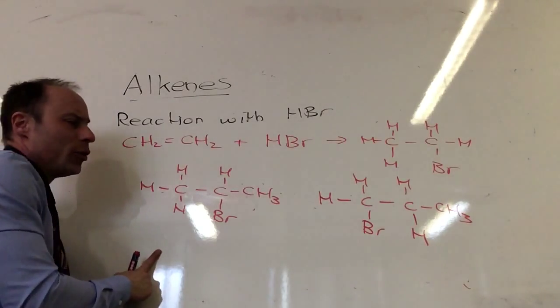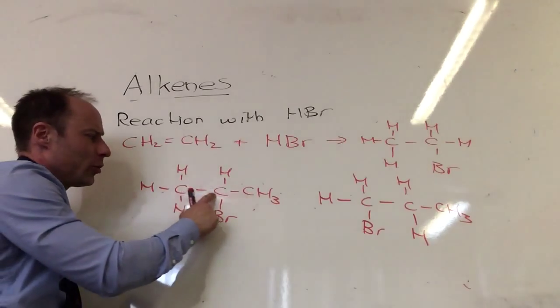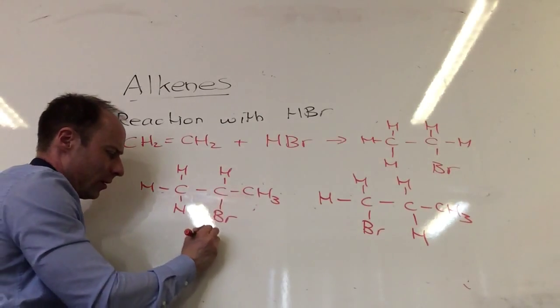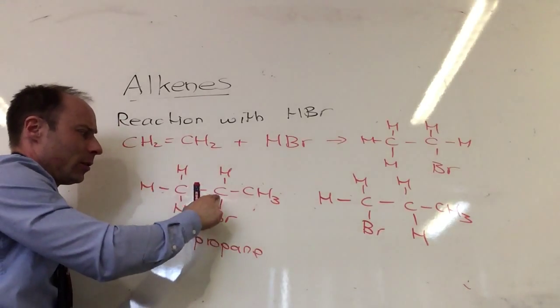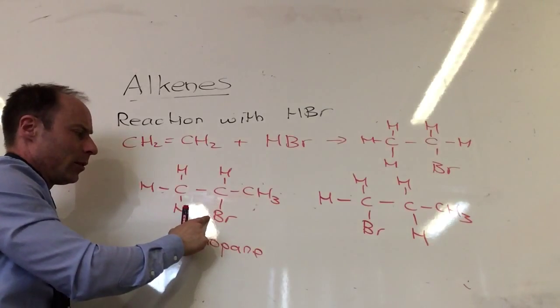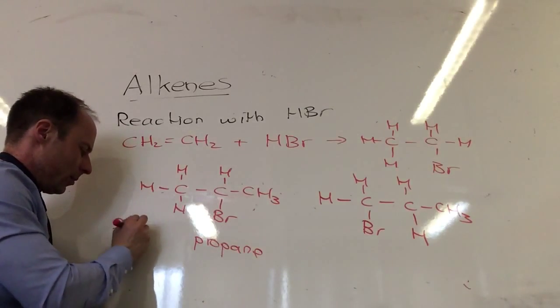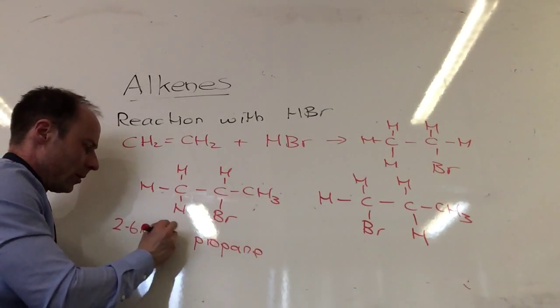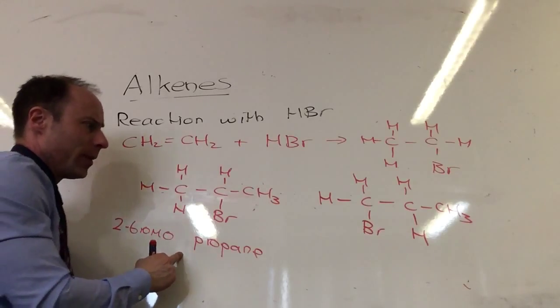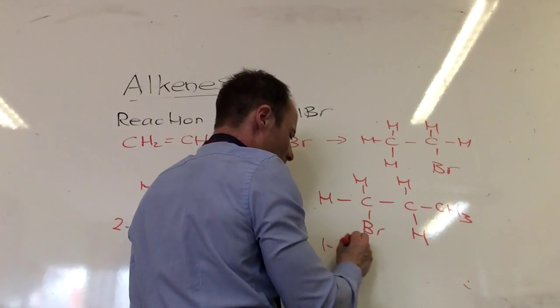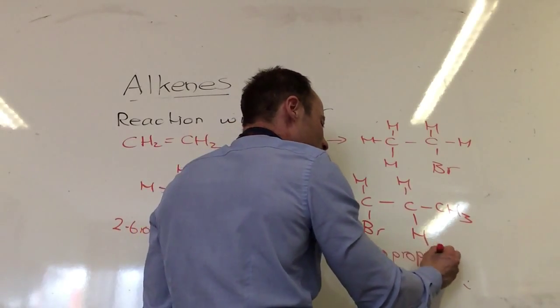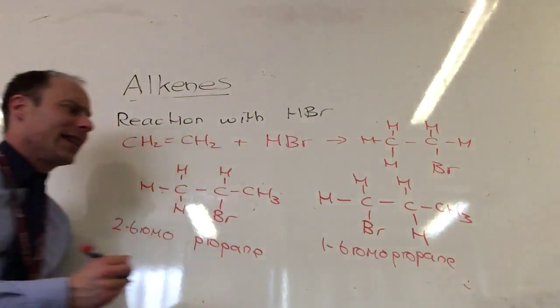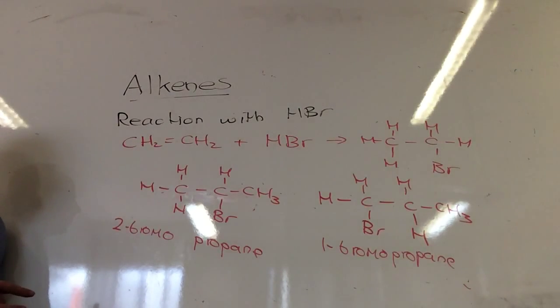What would this molecule be called? 1, 2, 3... 2-bromopropane and this is 1-bromopropane. So from one reaction, I get two different molecules. These are isomers of each other. They'll often ask you to do the two different isomers.